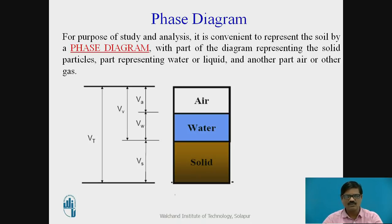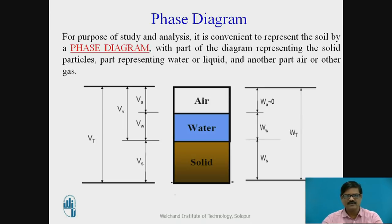On the left-hand side, we have all the volume components: Vt is the total volume of soil, Vv is the volume of voids — which comprises air and water — and Vs is the volume of soil solid. On the right-hand side, we show all the weight components: Wa is the weight of air, which we usually neglect and set equal to zero; Ww is the weight of water; Ws is the weight of soil solid; and Wt is the total weight.